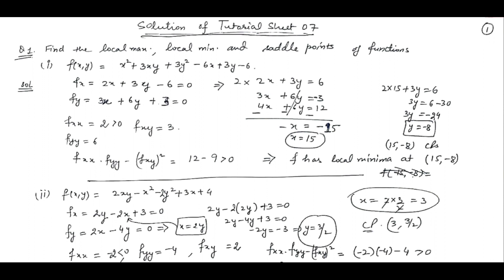Hello everyone. Today I am going to explain the solution of tutorial sheet 7. Question number 1 is based on local maxima, local minima and saddle point of the function. Basically this tutorial sheet 7 is based on finding the extreme value, saddle point, absolute maxima and absolute minima. So you are given a function of 2 or 3 independent variables. You have to find out the local maxima, local minima and saddle point.